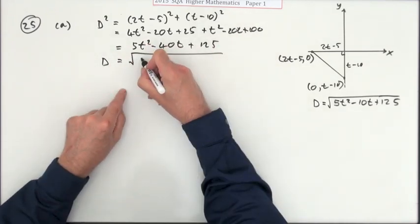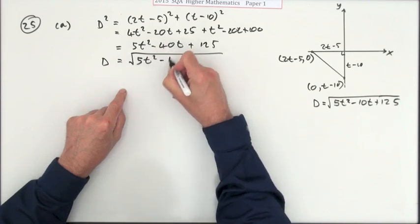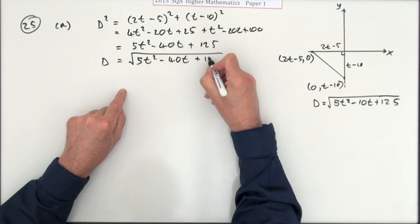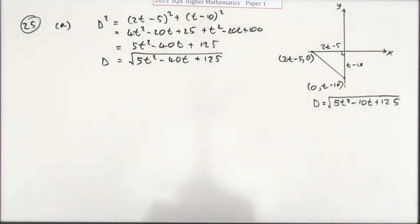Square root of 5t squared minus 40t plus 125, and that's what that should have said, minus 40t. I just wrote it down wrong.